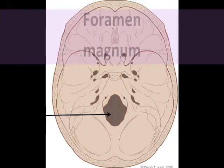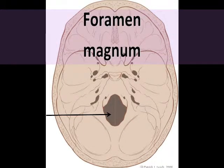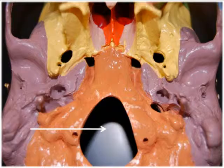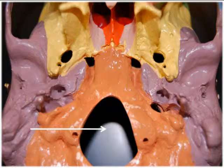Our first structure on the occipital bone is the foramen magnum, which literally means big hole. It's located on the inferior occipital bone, and it's the region where the medulla oblongata of the brain — the brain stem — connects with the spinal cord. The foramen magnum also allows passage of the vertebral and spinal arteries along with the accessory nerve, which is cranial nerve 11.